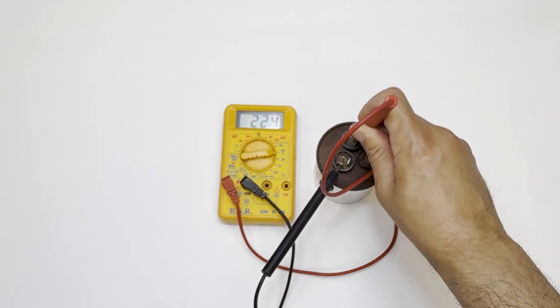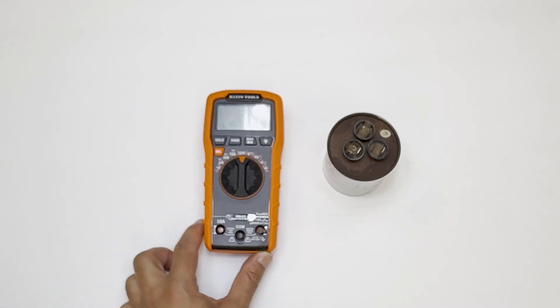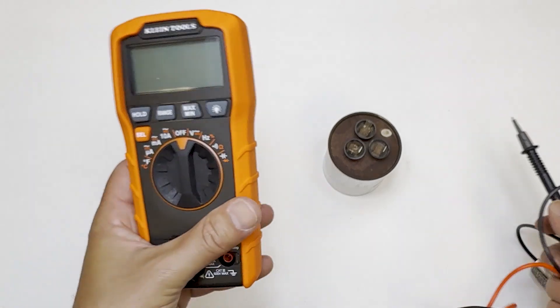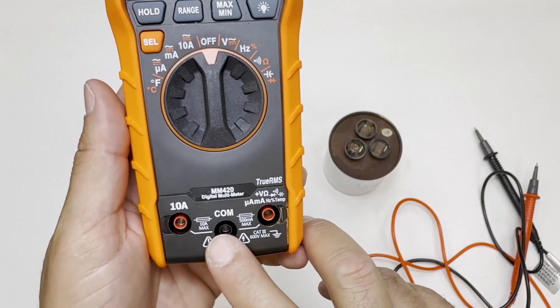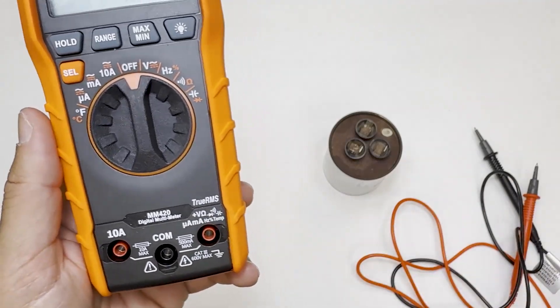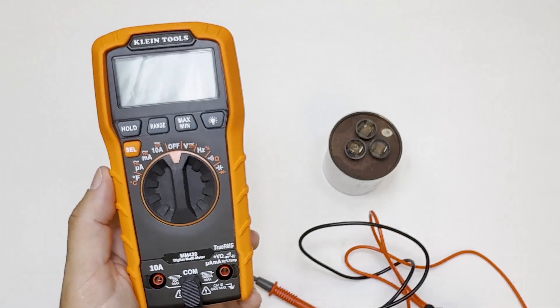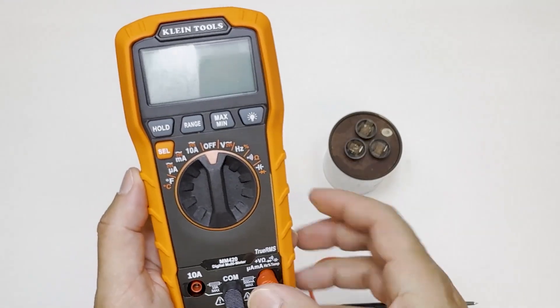Next, we'll use a multimeter that has a capacitance mode to get exact numbers. First, we'll put the black probe in the common and the red in capacitance. Switch the multimeter to capacitance setting, and again, the black lead goes to C, and the red lead goes to the terminal you're testing.